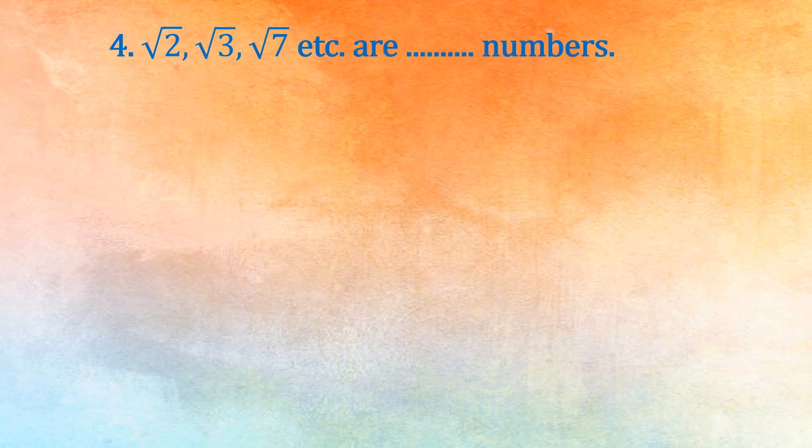4th one: square root of 2, square root of 3, square root of 7, etc. are dash numbers. Answer: irrational.